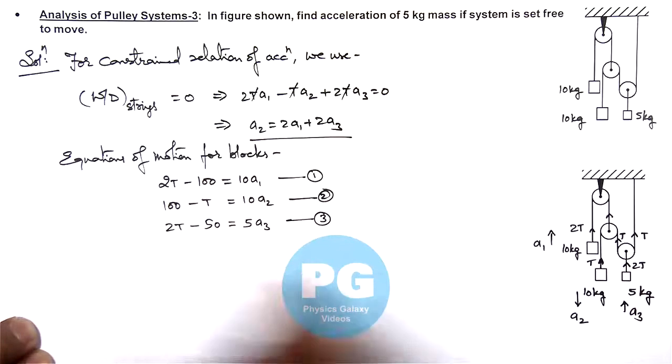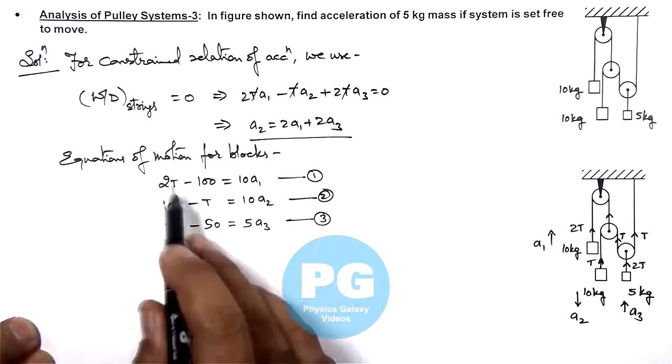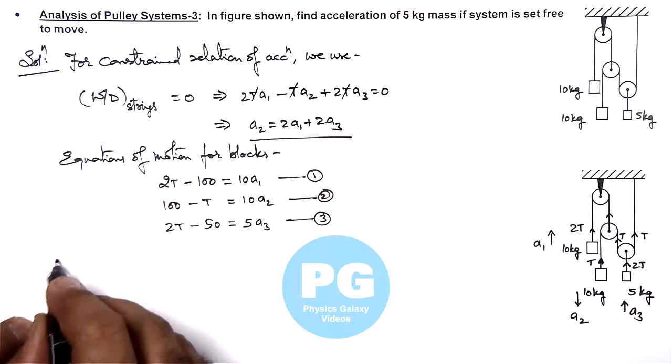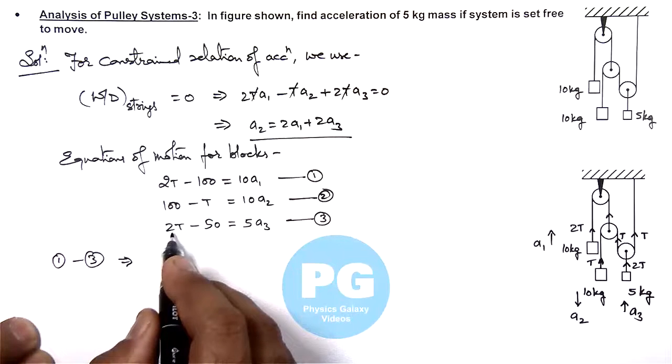Now to solve these equations, first what we can do, we can eliminate t from these two equations. So here 1 minus 3 will result, this 2t gets cancelled out.